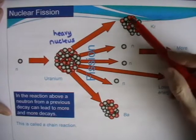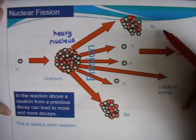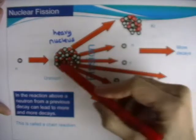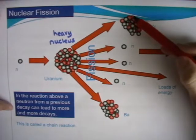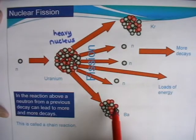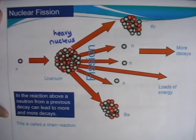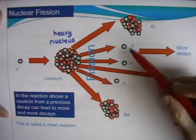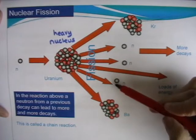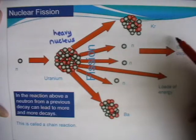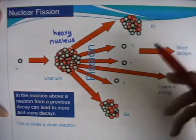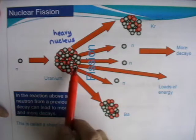There are different types of elements produced, but once you've changed the nucleus, you've changed the element. So here we have krypton and barium. It also produces other neutrons, and those other neutrons then will hit other uranium nuclei and produce more neutrons.